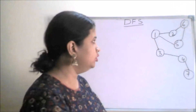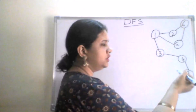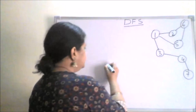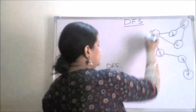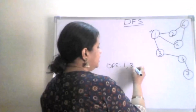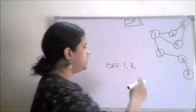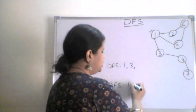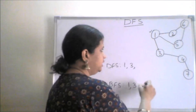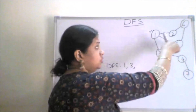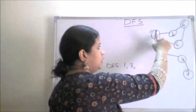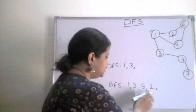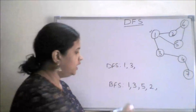In DFS, we choose any one node. It is up to you which particular node you want to choose. Suppose after one I have chosen three. In DFS, I pick one neighbor and go that route, choosing nodes one and three in order.